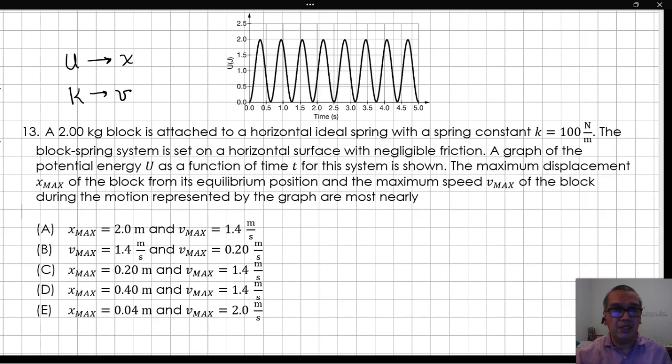From the graph, it is clear that the potential energy is maximum at several different times, but the maximum potential energy is always 2.0 joules.